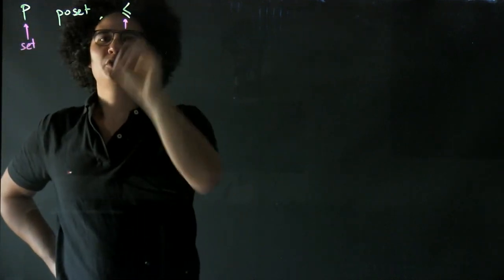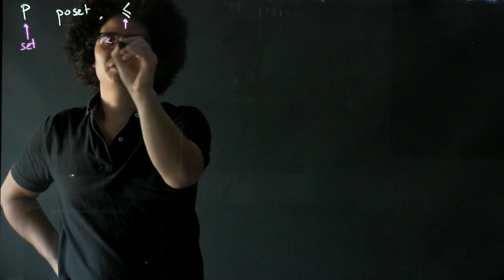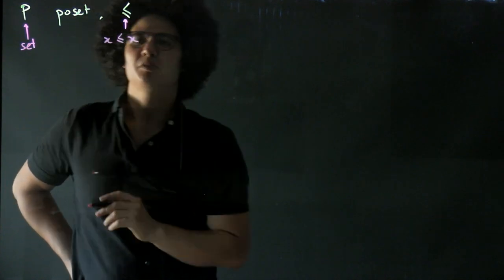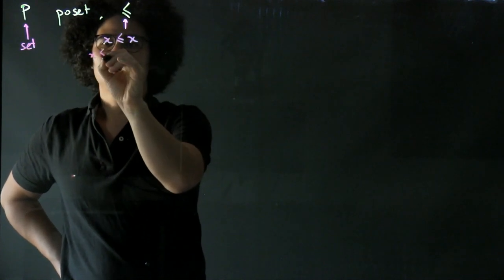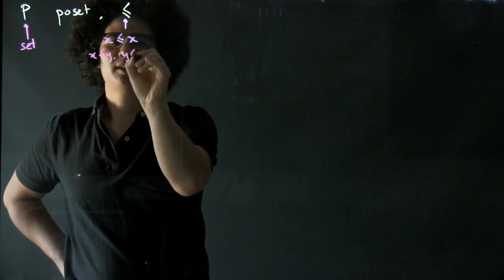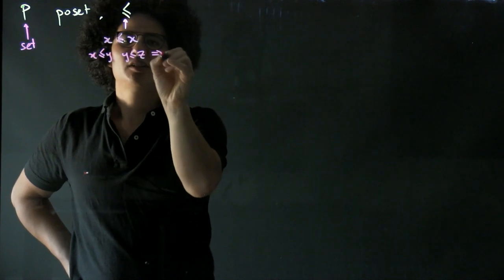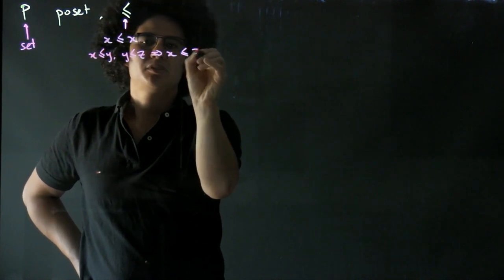The partial order on P is a relation that is reflexive, so elements are less than or equal to themselves. It's transitive, so x less than or equal to y and y less than or equal to z tells us that x is less than or equal to z.